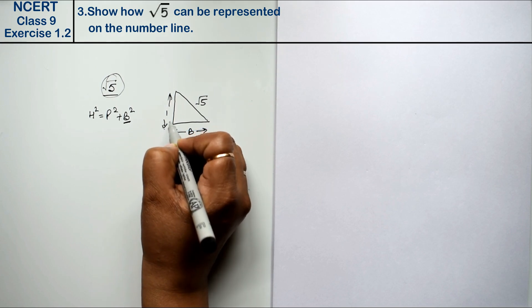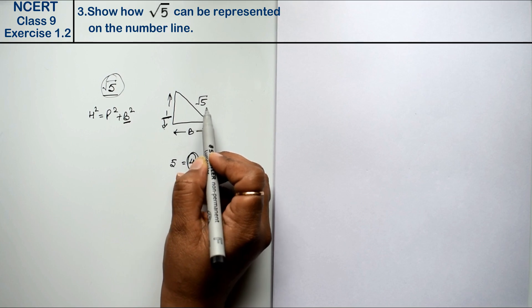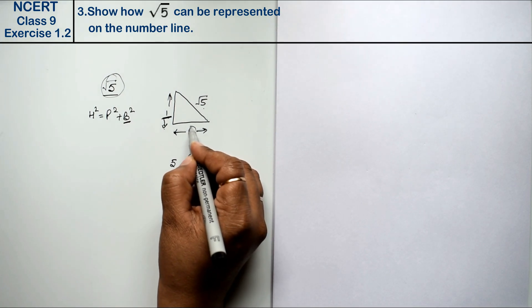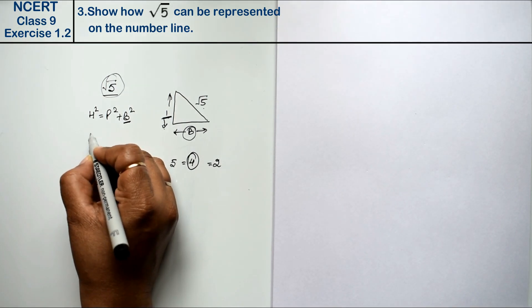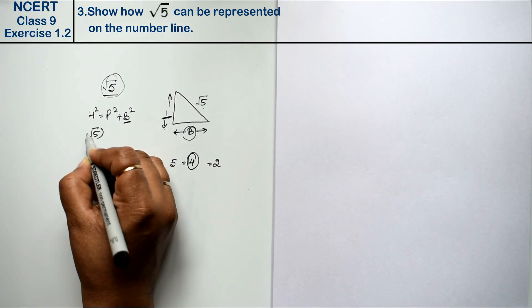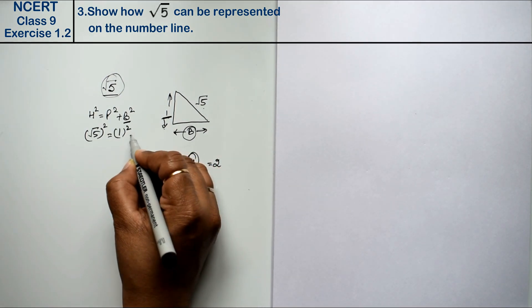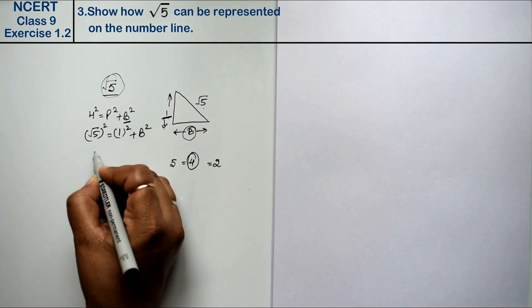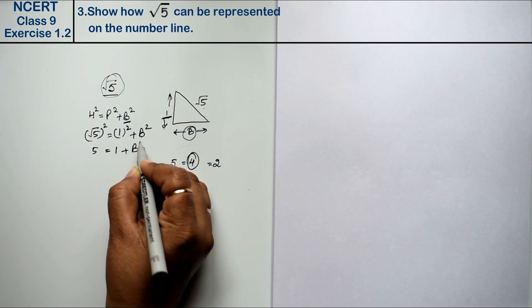And we always take perpendicular as 1, right friends? So if we always take perpendicular as 1 unit, and we have to find root 5, then how do we find base? It has a reverse method. So if we take root 5, root 5 square equals to perpendicular 1 square plus b square. This is 5 equals to 1 plus b square.